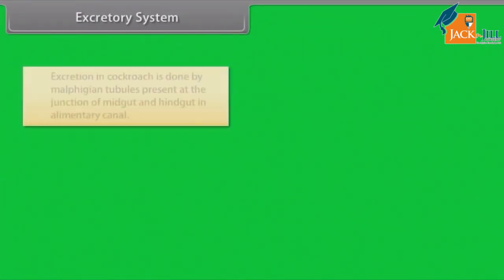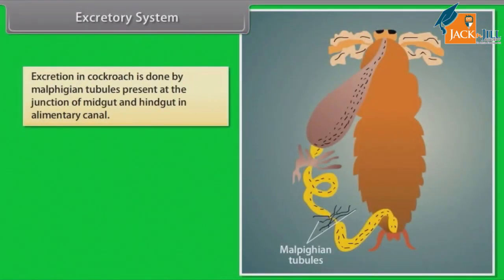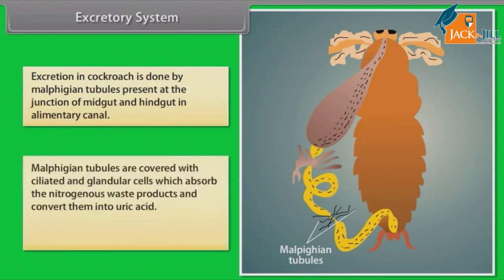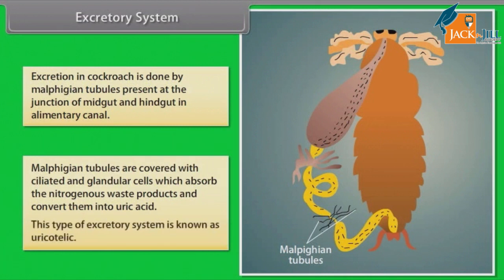Excretory System: Excretion in cockroach is carried out by Malpighian tubules. These are covered with ciliated and glandular cells, which absorb nitrogenous waste products and convert them into uric acid. This type of excretory system is known as uricotelic.